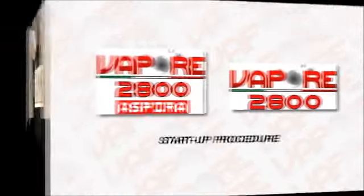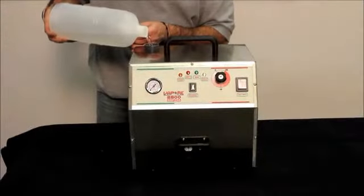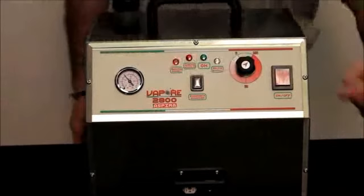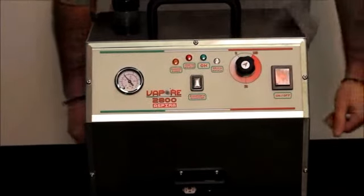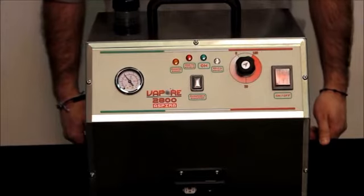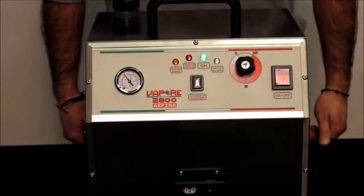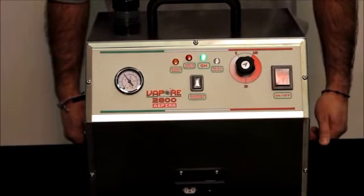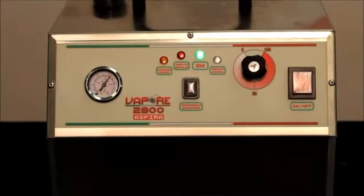Startup procedures: Fill the reservoir with water. Only use tap water. Plug in the unit. Press the on and off button to turn on the machine. The button will light up. The green light will begin flashing. When the green light stays on steady, the machine is ready.